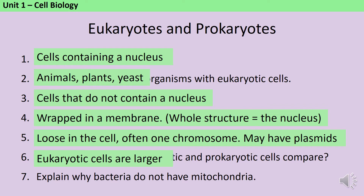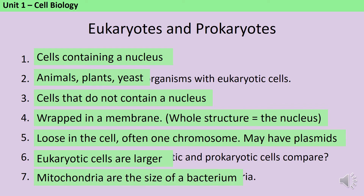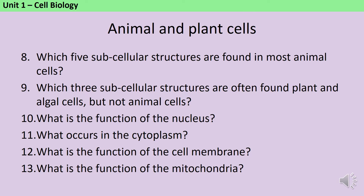Eukaryotic cells are larger than prokaryotic cells, and bacteria do not have mitochondria because the mitochondria are about the size of a bacterium, having originally been bacteria themselves. Animal cells typically contain a nucleus, cytoplasm, cell membrane, mitochondria and ribosomes.